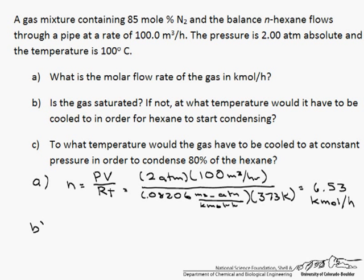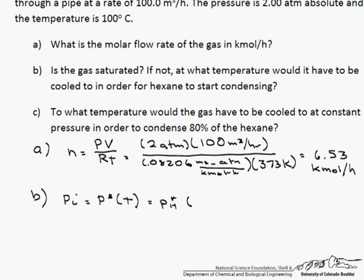The next thing we need to find out is if the gas is saturated. And what that means is, at saturation, the partial pressure of the gas has to equal the vapor pressure of the gas at that temperature. And in this case, it is the vapor pressure of our hexane at 100 degrees C.